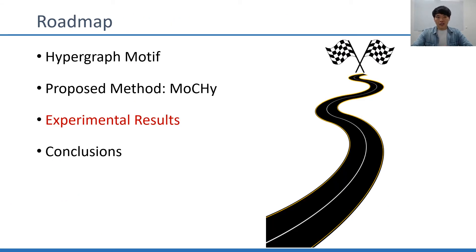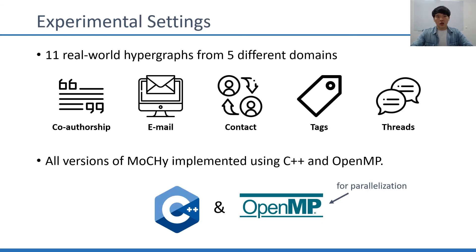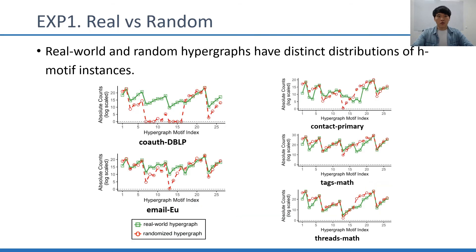Now let's move on to our experimental results. We performed experiments on 11 real-world hypergraphs from five different domains. Mochi is implemented using C++ and OpenMP. First, we compare local structures of real-world and randomized hypergraphs — specifically, we compare the count of each H-motif's instances in each real-world hypergraph with the corresponding count in randomized hypergraphs. In the figure, we can see that the count distributions in real-world hypergraphs are clearly distinguished from those of random hypergraphs.